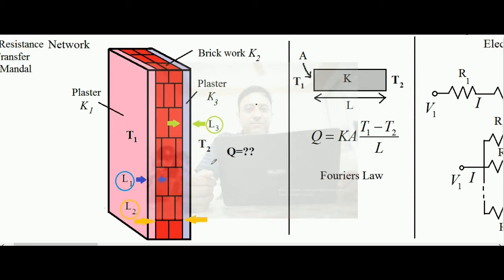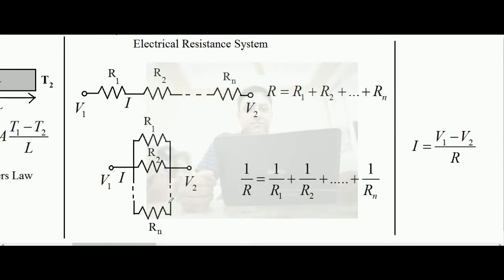For such cases the thermal resistance concept is helpful. Let us recall the electrical resistance network system. We have electrical resistances r1, r2, up to rn all in series. If we apply electric potential v1 at one end and v2 at the other, the overall resistance is the algebraic sum of all resistances: R = r1 + r2 + ... + rn. The electric current is then i = (v1 − v2) / R.